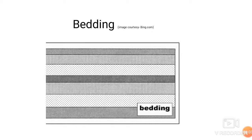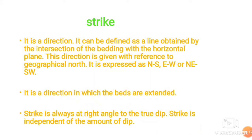We can also observe the difference in color, texture, and composition as discussed. The next very important and basic term in structural geology is Strike. Once we approach a particular bed, if that bed is inclined — meaning it makes some angle with the horizontal plane — we need to determine its attitude. If the bed is horizontal, there is no question of dip and strike. But when the bed is inclined, we have to determine its attitude, which means its dip and strike.